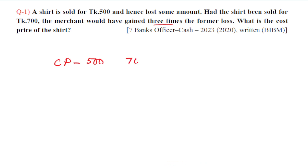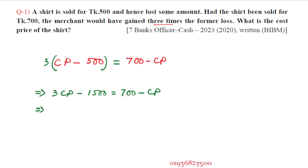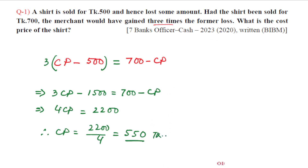We solve for CP: simplify 3CP minus 1500 equal to 700 minus CP. So 4CP equals 1500 plus 700, which is 2200. Therefore CP is 2200 divided by 4, which equals 550. So taka 550 is the cost price — that is the answer.